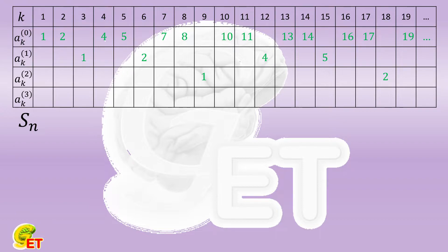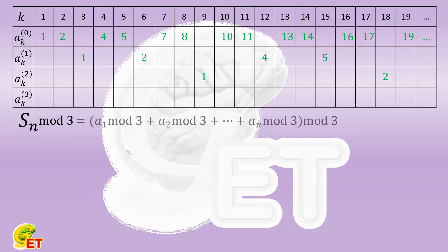To discuss whether S(n) can be divisible by 3, we calculate the remainder when S(n) is divided by 3 — that is, the remainder when the summation of all numbers in this table is divided by 3. This equals the remainder of dividing by 3 the sum of remainders of all those numbers divided by 3. So let's calculate the remainders of dividing each number in the table by 3.